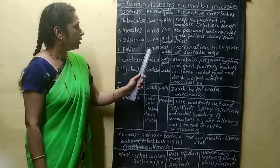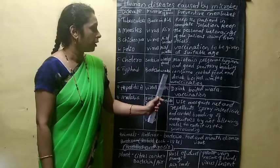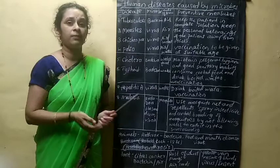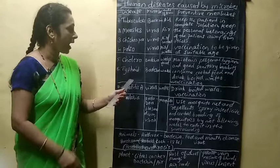Cholera is caused by bacteria and is transmitted through water and food. Typhoid is also a bacterial disease, transmitted through water. To prevent cholera and typhoid, maintain personal hygiene and good sanitary habits, consume cooked food, drink boiled water, and get vaccination.